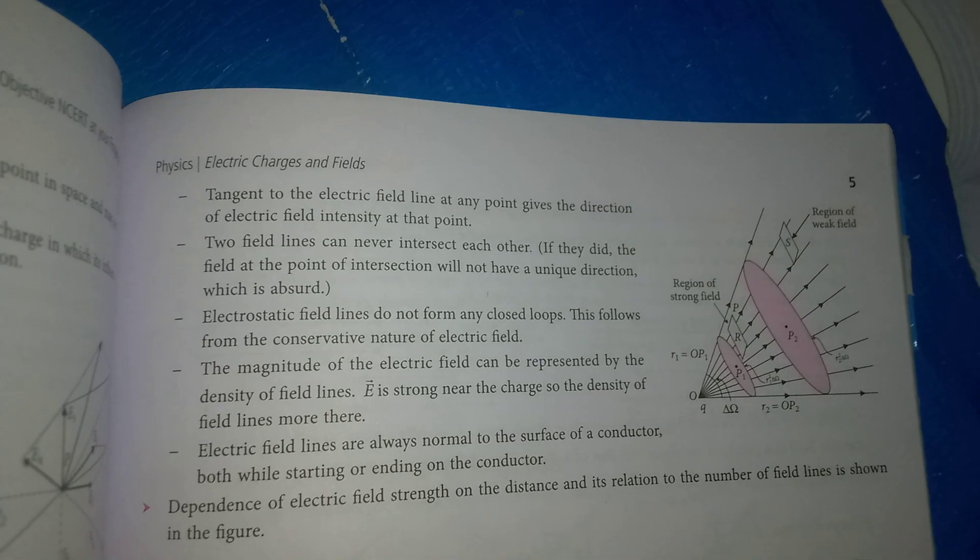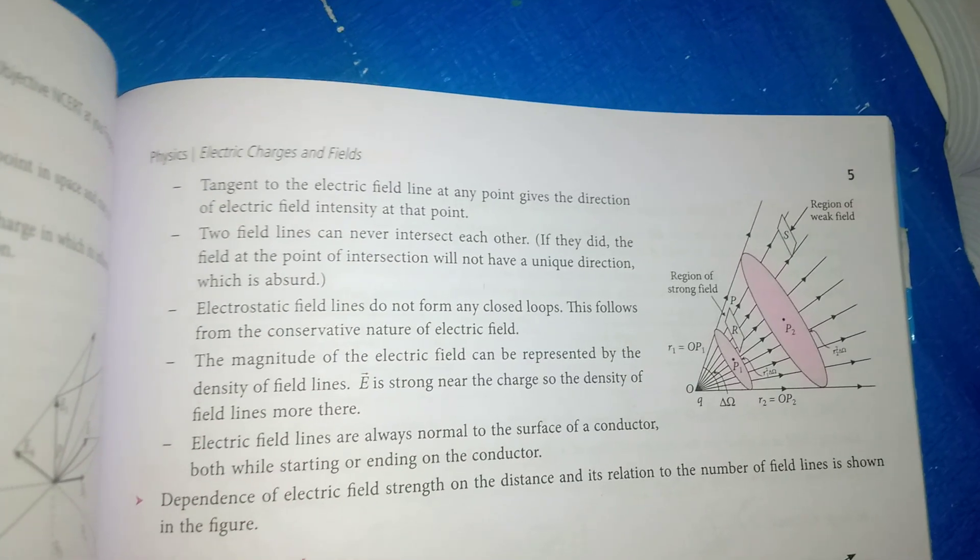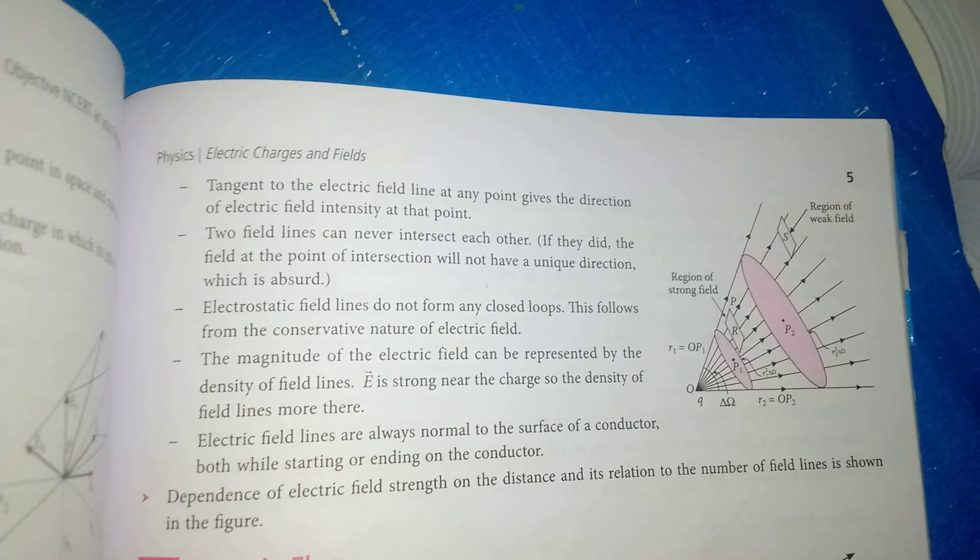Electric field lines are always normal to the surface of a conductor, both while starting or ending on the conductor.